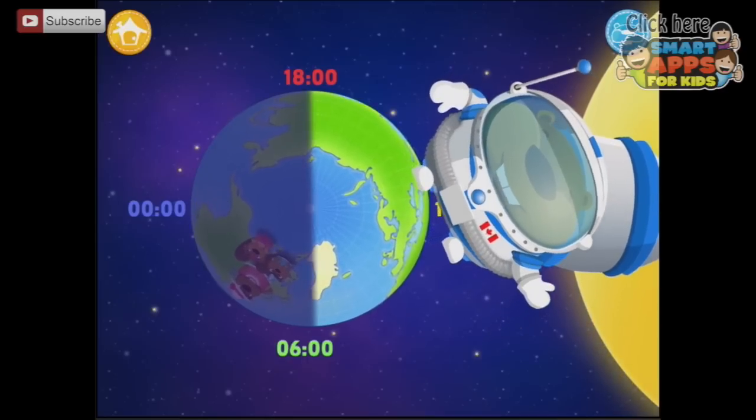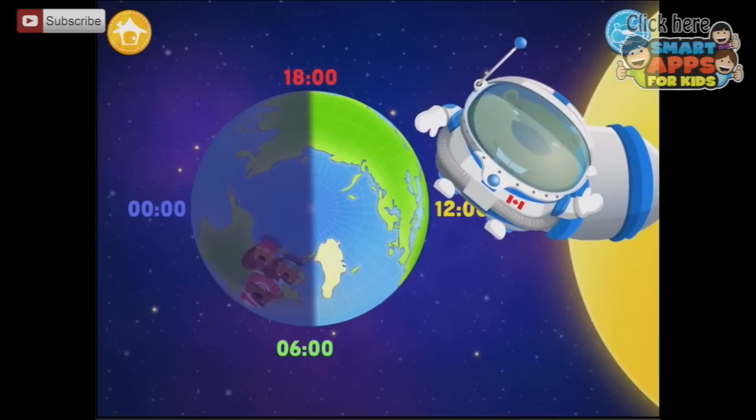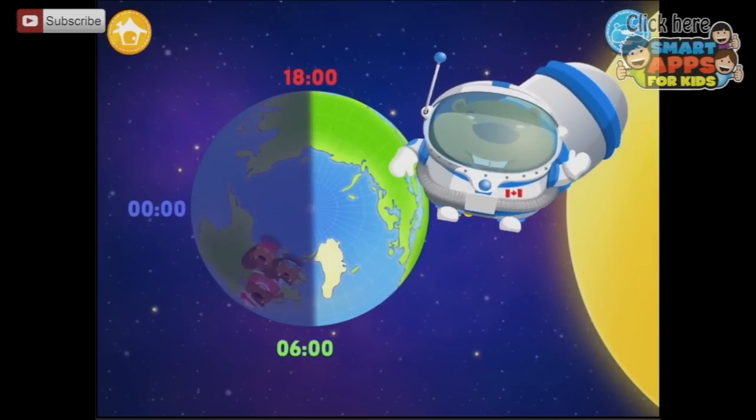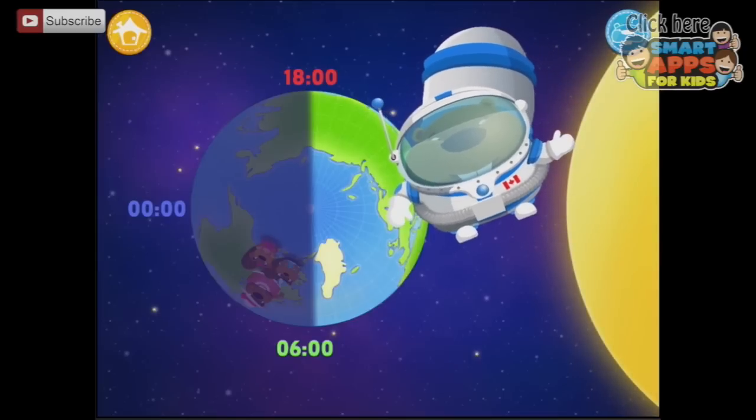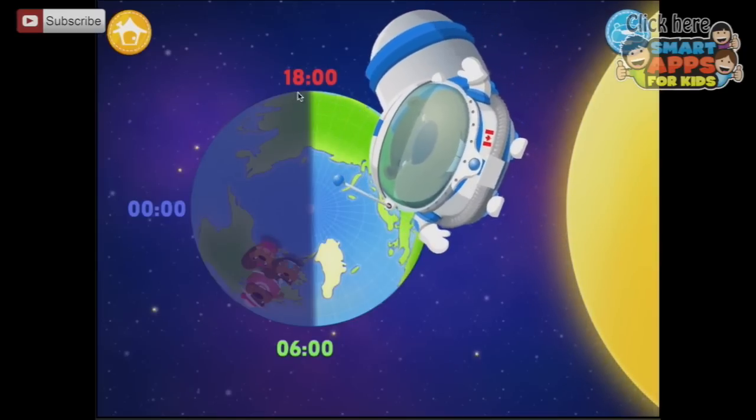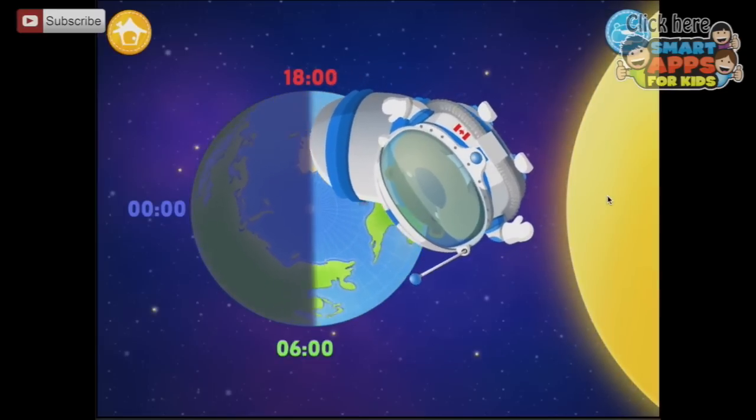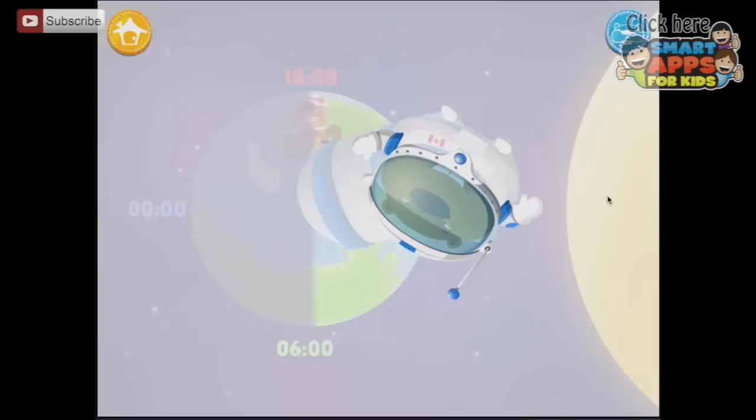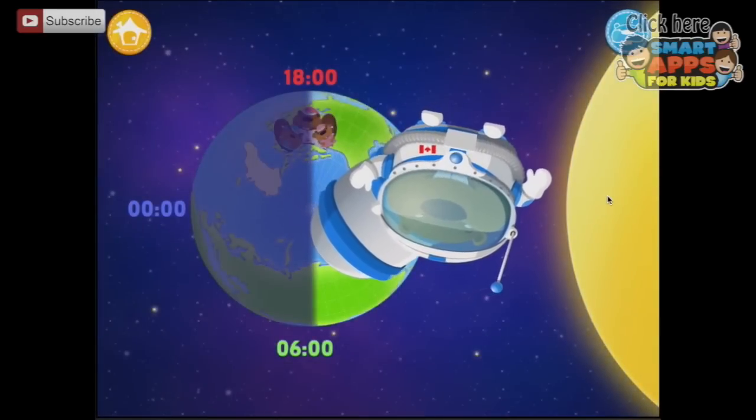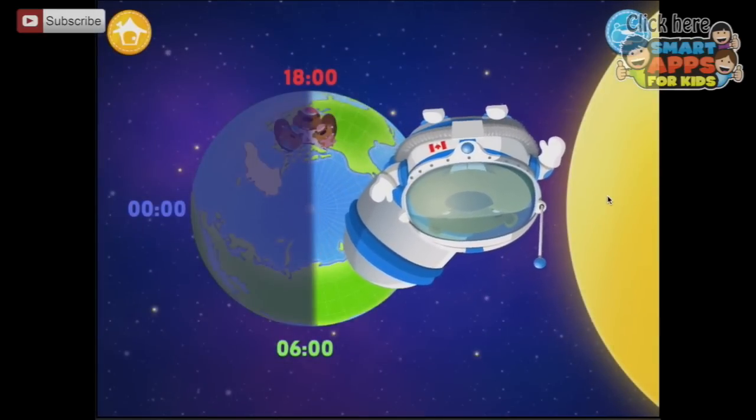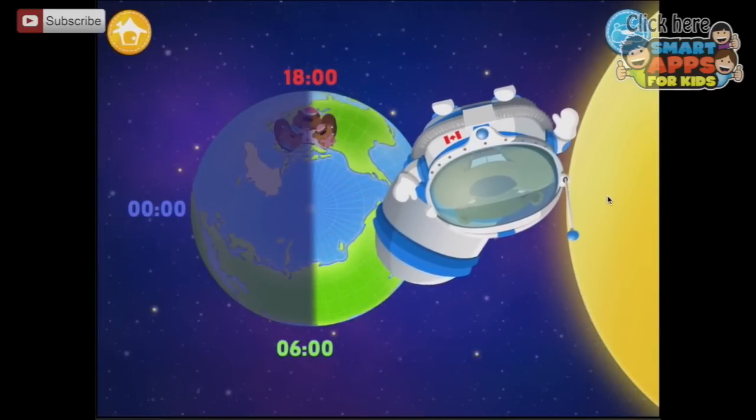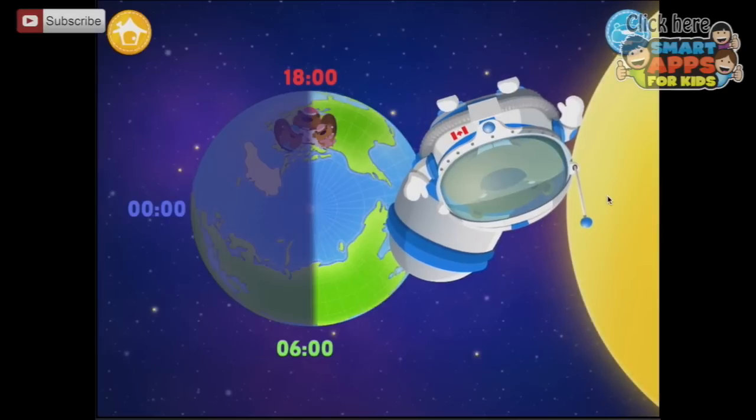Your turn. Make the Earth spin. Move my family around until they reach the red numbers. So at the red numbers they'll just be going into the dark. So they must be going from daytime into the evening. Soon they won't be able to see the sun from where they are. They'll say the sun is setting.